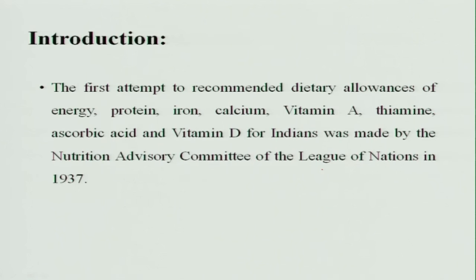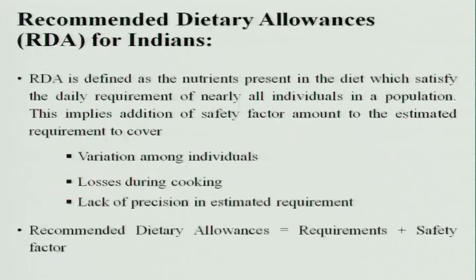This recommended dietary allowance was first made by the Nutrition Advisory Committee of the League of Nations in 1937. They tried to recommend allowances for energy, protein, iron, calcium, vitamin A, thiamine, ascorbic acid, and vitamin D for Indians. Recommended dietary allowances are different for different nations. For Indians, RDA is made by the Indian Council of Medical Research (ICMR), and it is defined as the nutrients present in the diet which satisfy the daily requirement for nearly all individuals in a population.